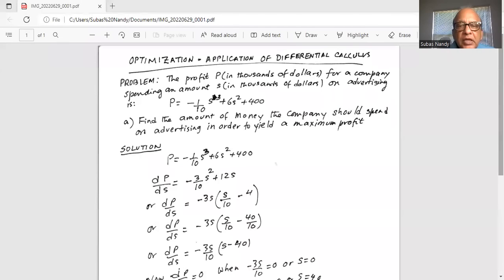The profit p in thousands of dollars for a company spending an amount s in thousands of dollars on advertising is p equal to minus 1 over 10 multiplied by s to the power of 3 plus 6s squared plus 400. Find the amount of money the company should spend on advertising in order to yield a maximum profit.